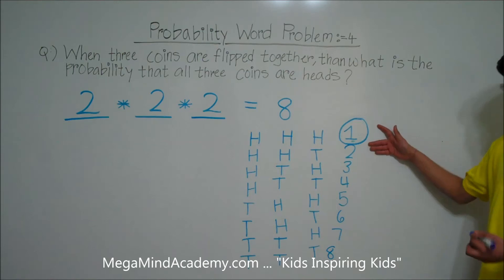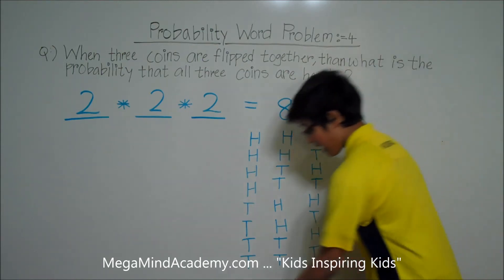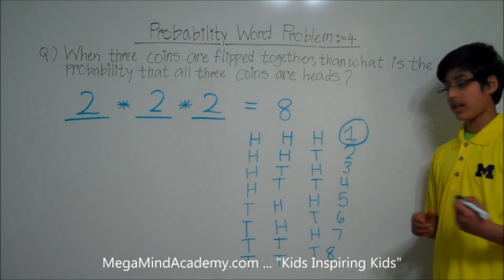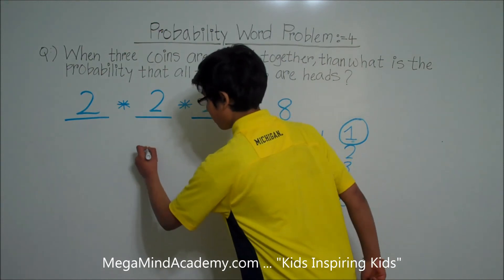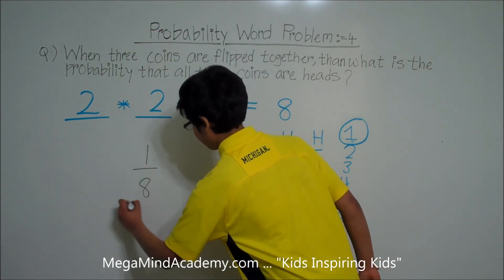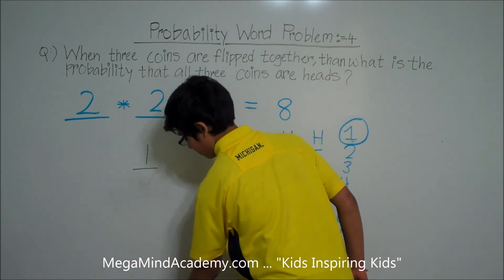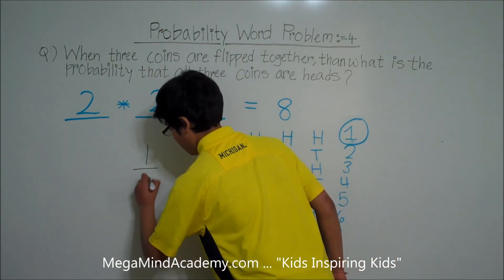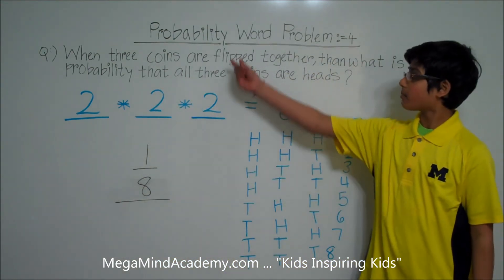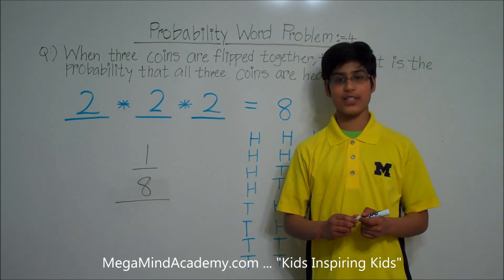There is only one outcome out of the eight outcomes, so the probability of getting three heads is 1 over 8. Today we learned about probability word problems — thank you for watching this video.